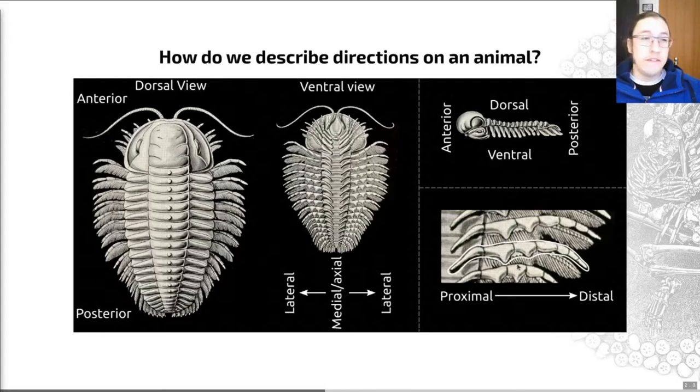For any individual thing that sticks out of an animal, such as the leg that I've highlighted here, we can talk about proximal, close to, through to distal, far away from. So these are all a number of different axes that help you understand the different anatomy and spatial relationships of an organism.